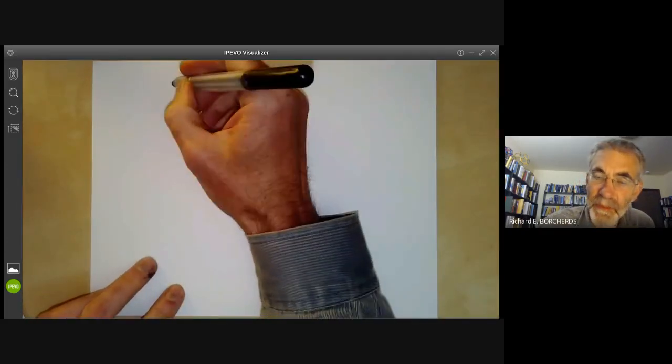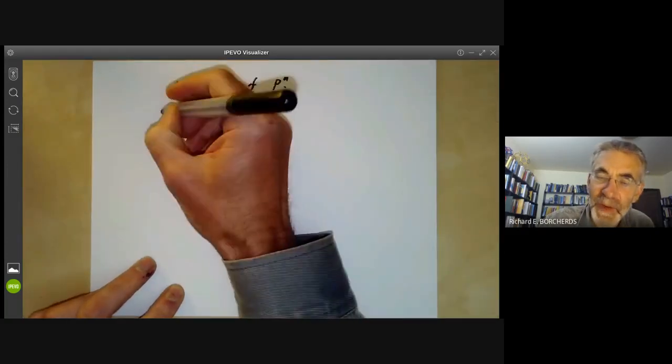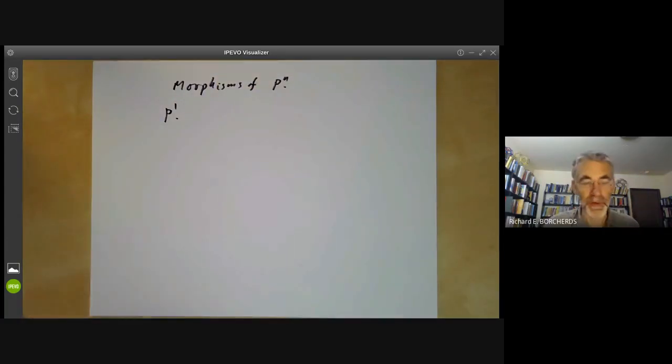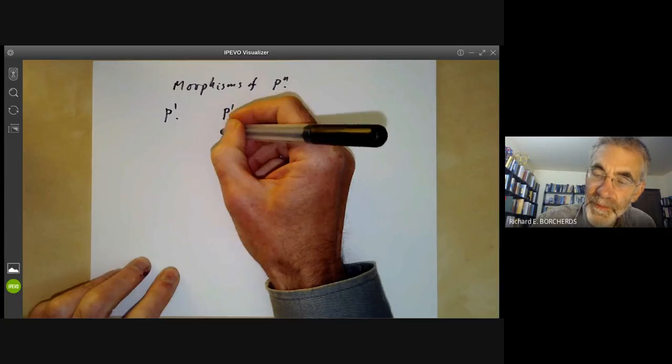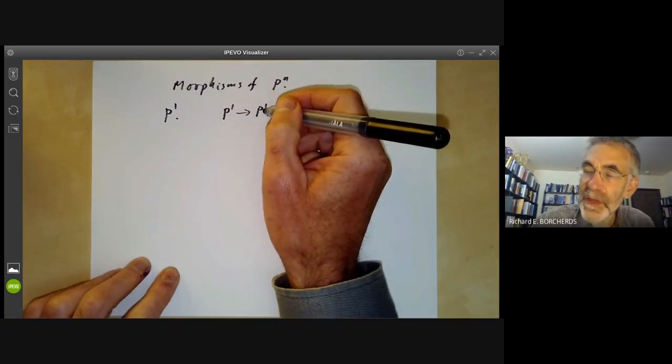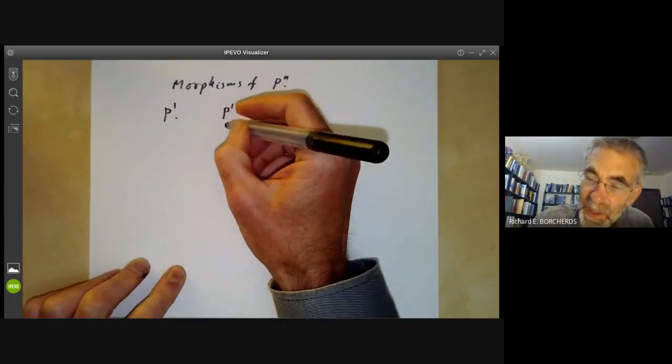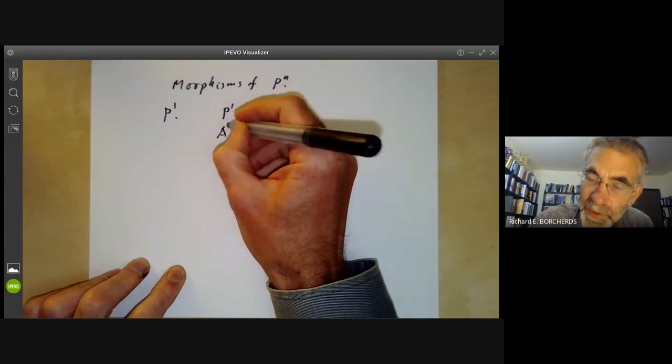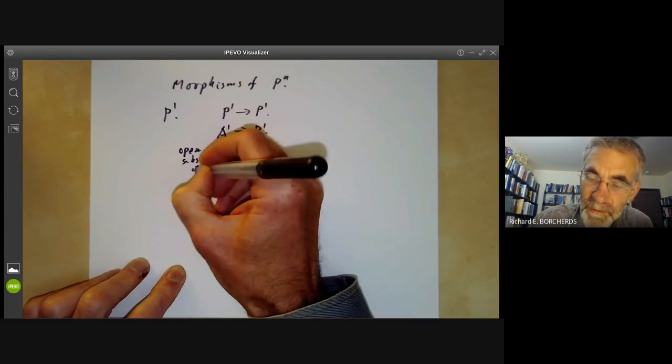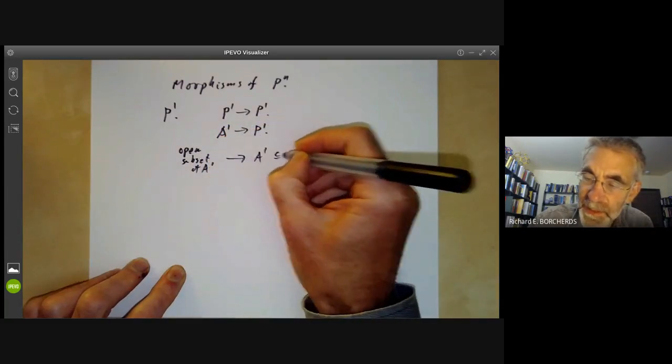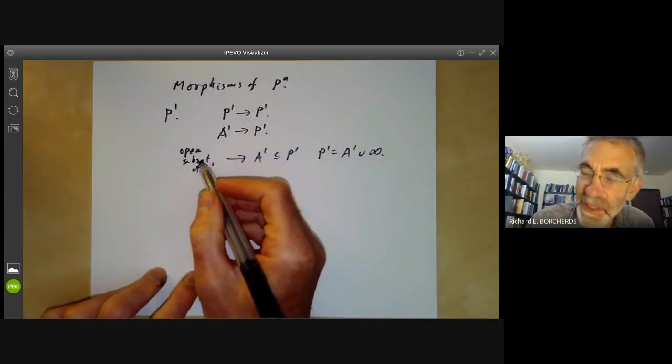That's done morphisms of affine space - the affine line is easy and higher dimensions are a real headache. Now let's look at morphisms of projective space. We should start by looking at automorphisms of P¹. If we've got a map from P¹ to P¹, we can restrict this to a map from A¹ to P¹ and we get a map from an open subset of A¹ to A¹, which is contained in P¹. So we've got a map from an open subset of A¹ to itself.